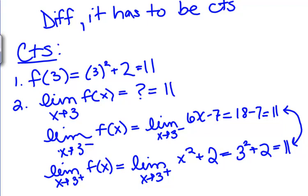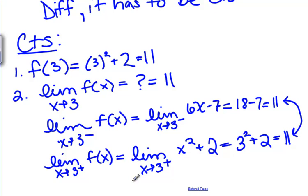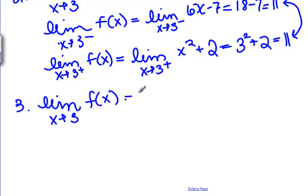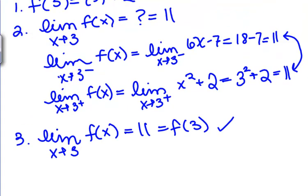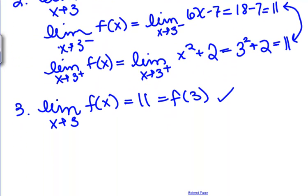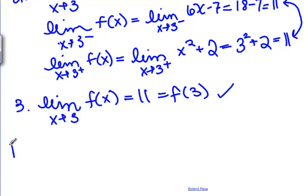Since the limits from both sides agree, the limit as X goes to 3 of F of X is 11. The third step of continuity is to show that the limit as X goes to 3 of F of X, which is 11, equals the function value, which is also 11 — so we're good. We've verified all three steps of continuity, so we can continue and check differentiability.